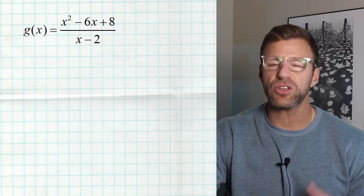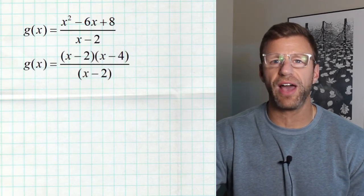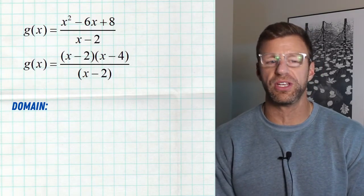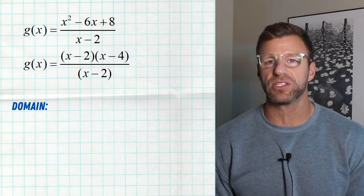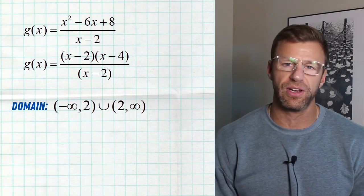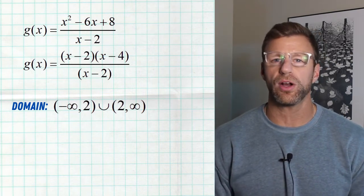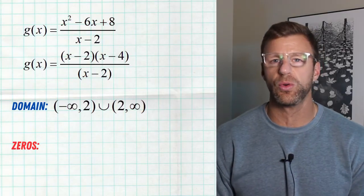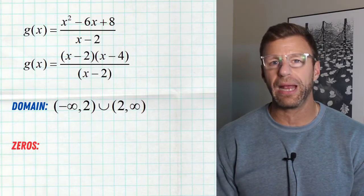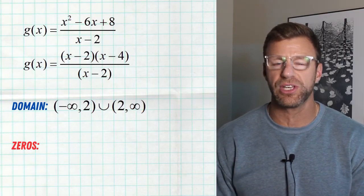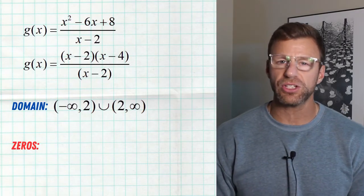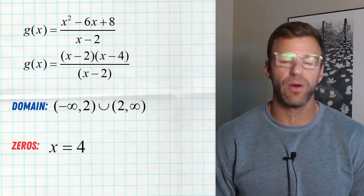In this next example, it's always easier to factor first. Then we look at the denominator: what values must be excluded from the domain? In this example, that's positive two — it makes the denominator zero, so we exclude it. The domain is negative infinity to two, and two to infinity. Then we look at the numerator, and the values that make it zero are two and four. But two is excluded from the domain because it also makes the denominator zero. So this particular rational function has one and only one zero at positive four.